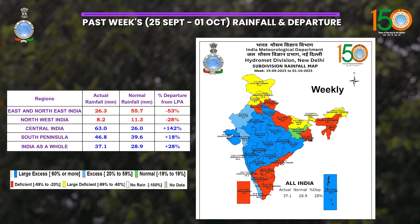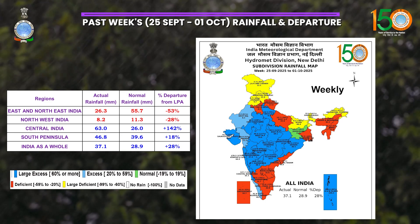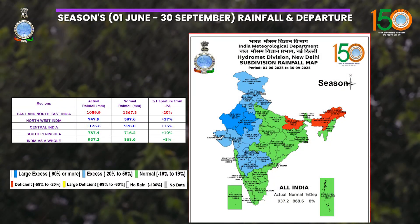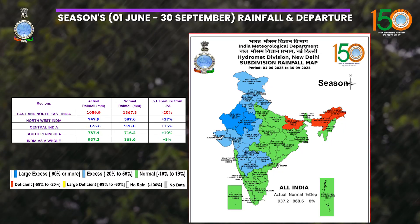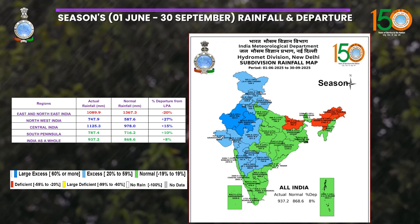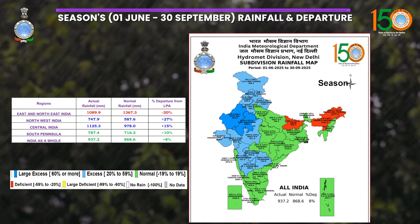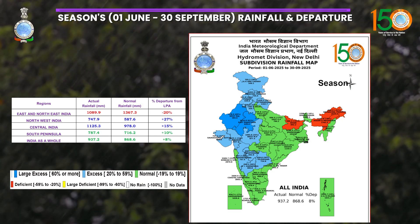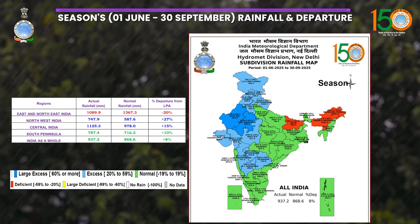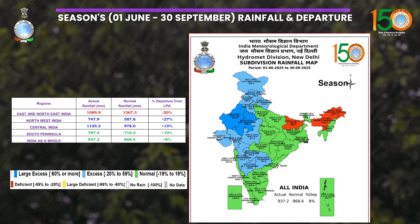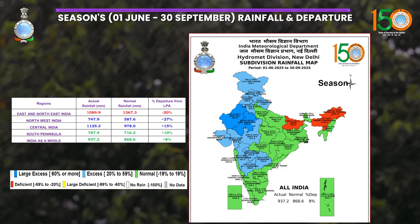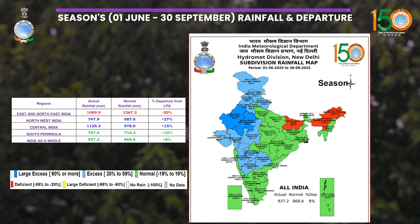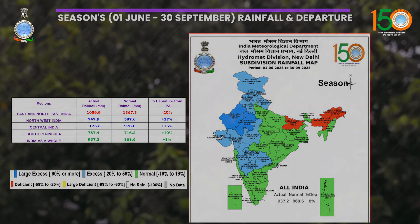For India as a whole for last week, there was excess rainfall of plus 28%, with actual rainfall of 37.1 mm against the long period average of 28.9 mm. For the seasonal monsoon rainfall, India as a whole recorded plus 8% excess, with actual rainfall of 937.2 mm against a normal of 868.6 mm. East and northeast India had a seasonal deficiency of minus 20%; northwest India had a seasonal excess of plus 27%; central India had plus 15%; and south peninsula India was near normal at plus 10%.